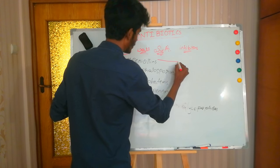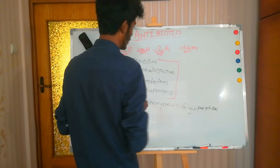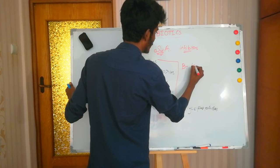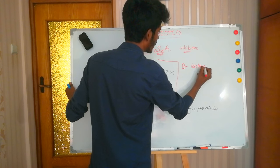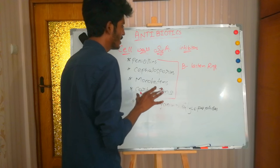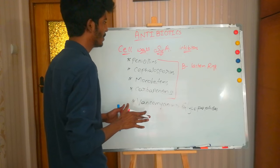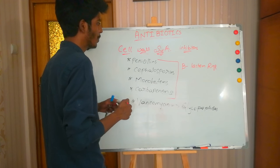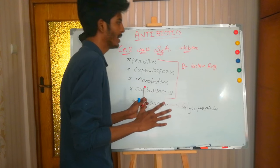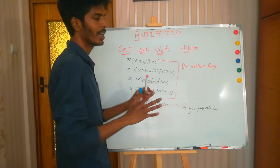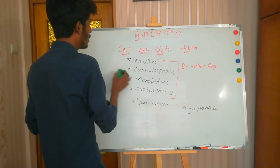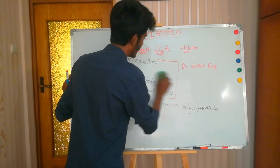One thing common about penicillins, cephalosporins, monobactams, and carbapenems is that they all have a beta-lactam ring. The beta-lactam ring is what majorly inhibits cell wall synthesis. So these drugs work by using their beta-lactam ring to inhibit cell wall synthesis. Now we will start discussing the penicillins.